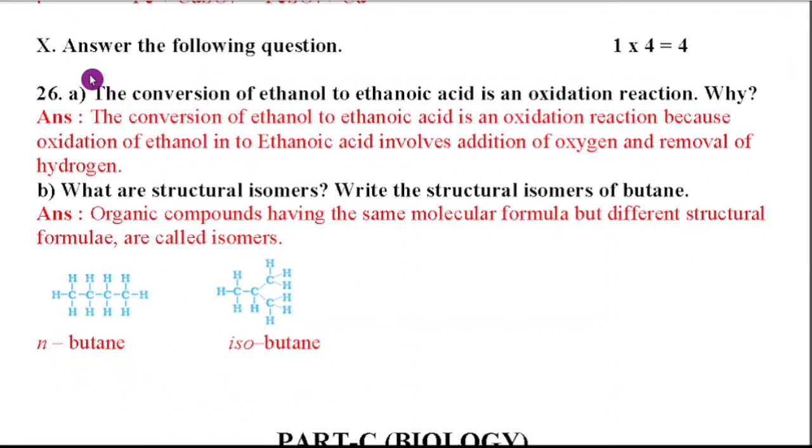So the next one, 10th main, answer the following question. Here only one question. It carries four marks. Twenty-sixth question. The conversion of ethanol to ethanoic acid is an oxidation reaction. Why? Because oxidation of ethanol into ethanoic acid involves addition of oxygen and removal of hydrogen. So it becomes oxidation reaction.